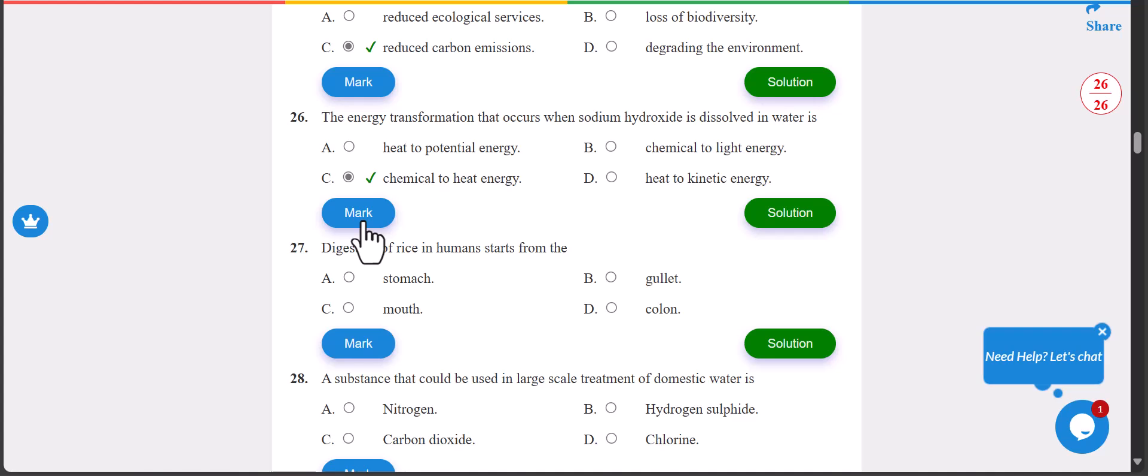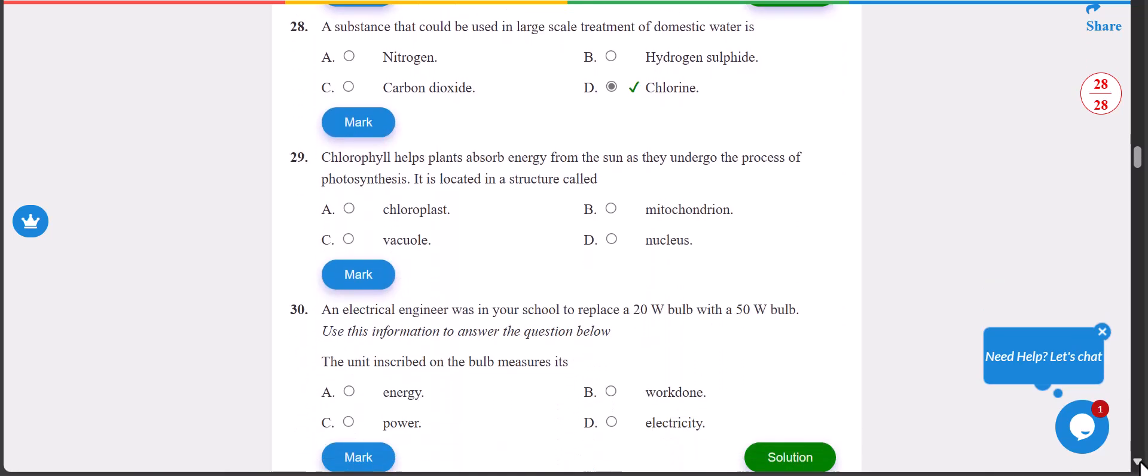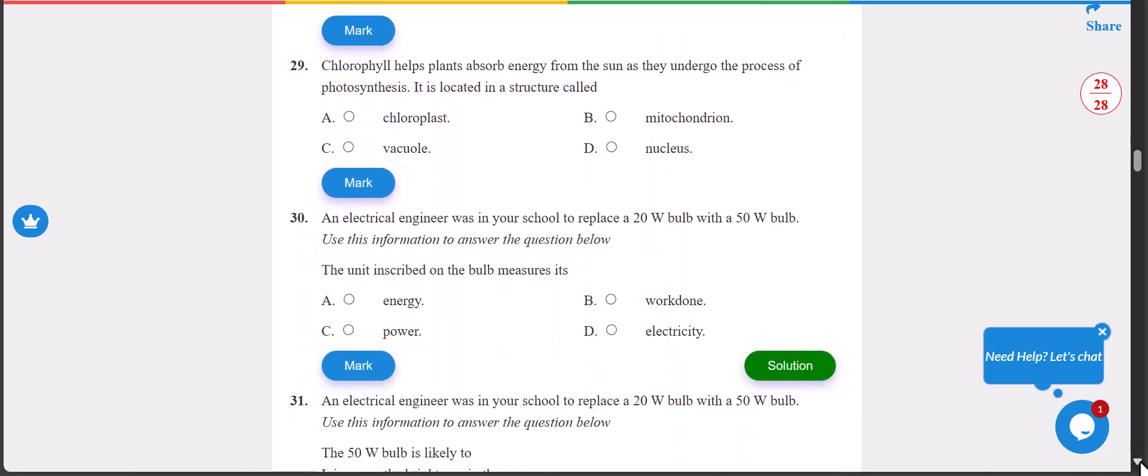Number 27: digestion of rice in humans starts from where? When you're taking carbohydrate, it starts from where? They just changed it to rice, but it's the mouth. C, which is the mouth. Number 28: a substance that could be used in logical treatment of domestic water is D, that is chlorine.